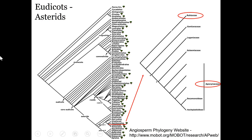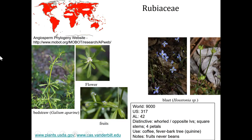Members of the Rubiaceae are relatively diverse — in fact they're one of your top five families in the world. There are 9,000 Rubiaceae species in the world, but most of the diversity is in the tropics. In the US there are about 317 species; in Alabama we just have 42. Central and South America and the tropics are the centers of diversity.